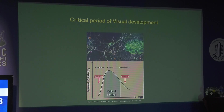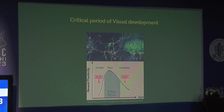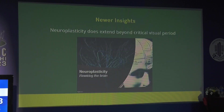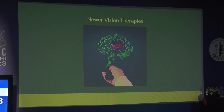Earlier, neuroplasticity was believed to be limited to the critical period of visual development — birth to eight years of age — so amblyopia therapy was limited to children. When we saw an adult amblyope, we had no other options. But with advances in neuroscience, it is now proven that neuroplasticity extends beyond the critical visual period and we can rewire the brain using various options.